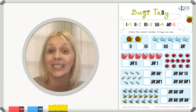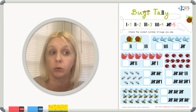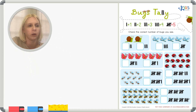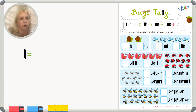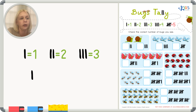The way we're going to do that is by using tally marks to help us keep track of things. Tally marks are basically just a little mark to represent a number. One mark equals one, two marks equals two, three equals three, four equals four.